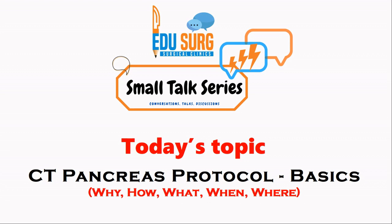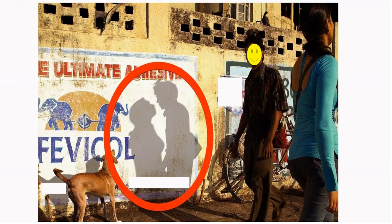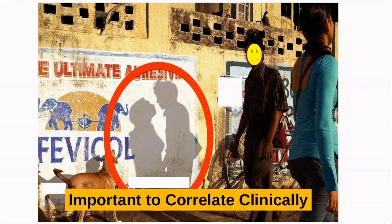Before going into this topic, just a very practical point we have learned from our teachers. As you can see here in black and white, these two people seem to be enjoying their company. However, actually it is not so — what we always see in shadow may not be actually true. This is an example to bring forward the point that it is very important to have a discussion in teams so that the black and white images of the scans are correlated clinically.